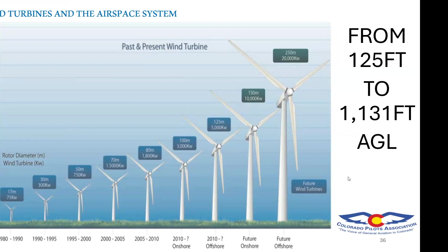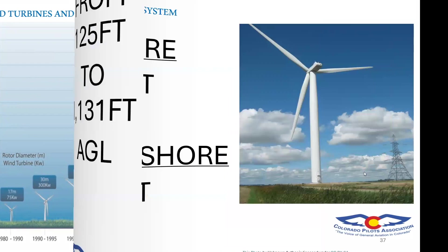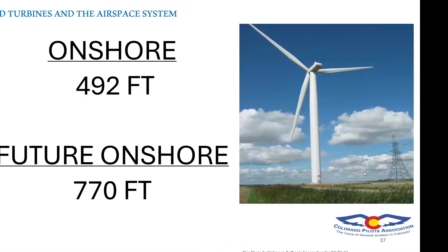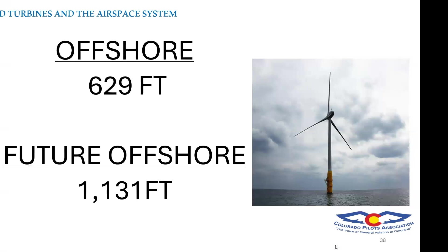The rotor diameter is also growing much larger. Previously, onshore wind turbines averaged 492 feet rotor diameter; future ones may reach 770 feet. Offshore, previously averaging 629 feet, future offshore turbines may reach 1,131 feet or larger. One comparison shows an A380 airplane at about half the radius of a modern wind turbine — 261-foot radius, 505-foot diameter. A 747 jumbo jet compared to the blade diameter is equally striking. These things are massive.